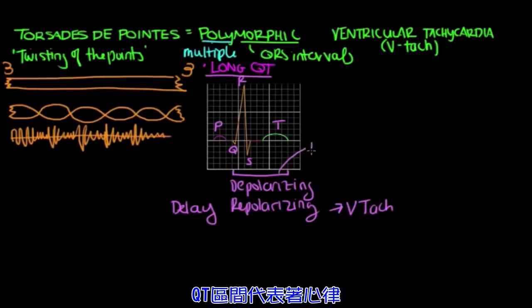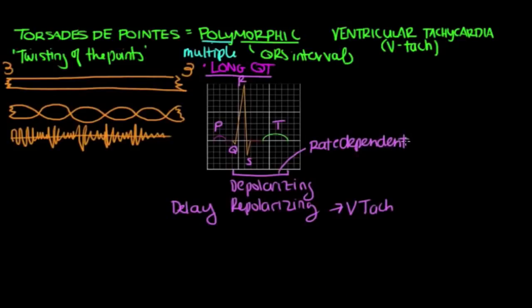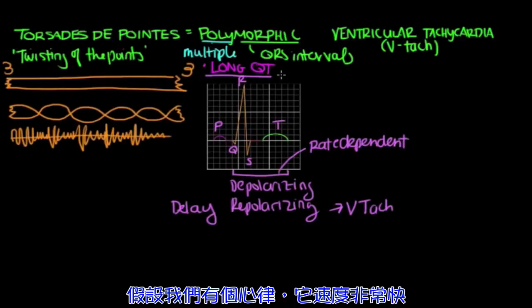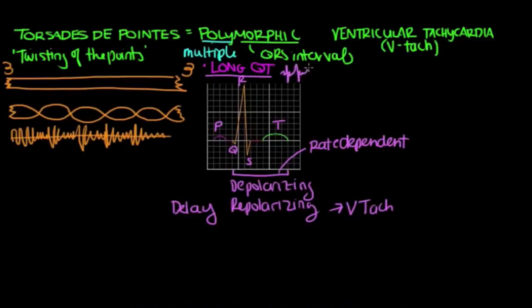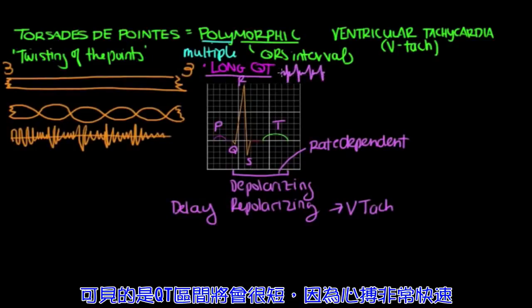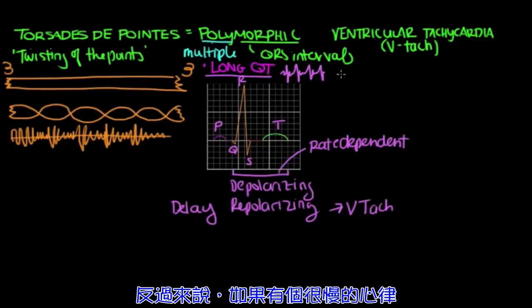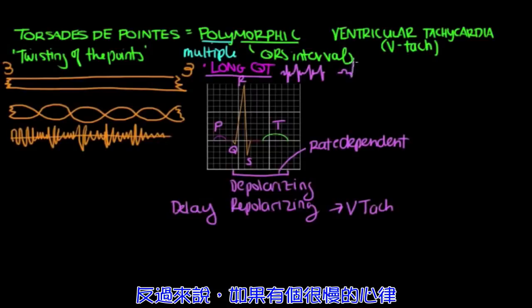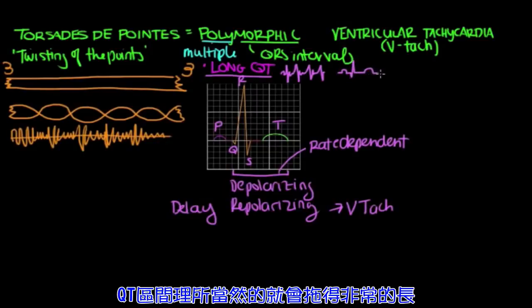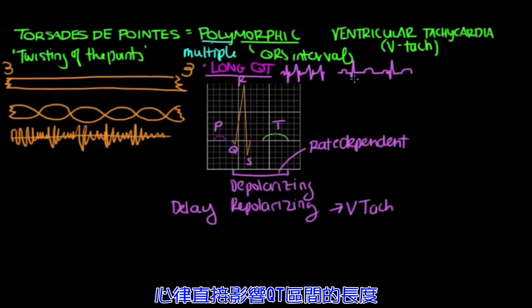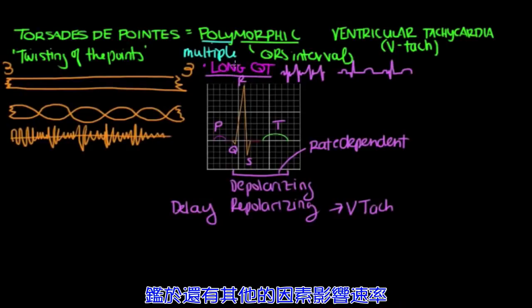Something else to note is that the QT interval is rate dependent. Now what does that mean? So let's say you have a heart rate and it's going very fast. You can imagine that the QT interval here is going to be pretty short because the heart's beating so fast. And on the other hand, if you have a heart rate that's going really slowly, you can imagine that your QT interval might be long and drawn out. So the rate of the heart affects how long the QT is. And given that there's some rate dependence, there are formulas created that adjust the QT interval.